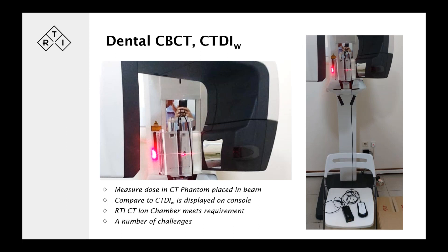To measure the CTDI weighted in a dental CBCT — which is often presented on the console as a value to be tested and tracked — you need to mount a CT phantom, place it in the beam (typically a head phantom), make an exposure, and compare that CTDI weighted value to the value on the console. We have an ion chamber that handles that, but there are a number of challenges when performing a CTDI measurement in a dental CBCT machine — one being finding a holder for the phantom to place it where it needs to be.